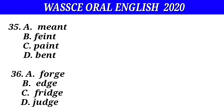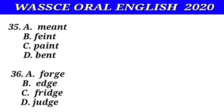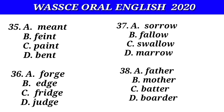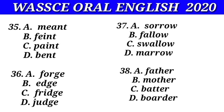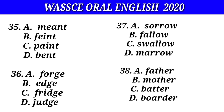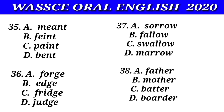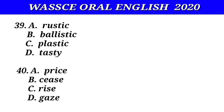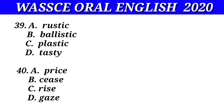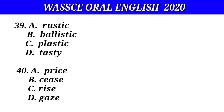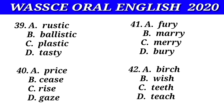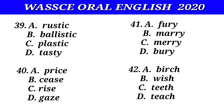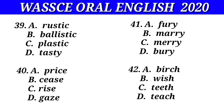Number thirty-five: paint. Number thirty-six: bridge. Number thirty-seven: arrow. Number thirty-eight: brother. Number thirty-nine: elastic. Number forty: prize. Number forty-one: jury. Number forty-two: beach.